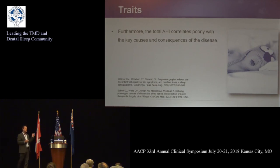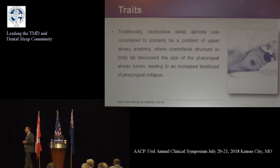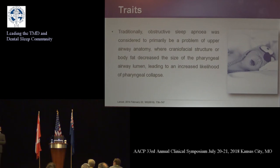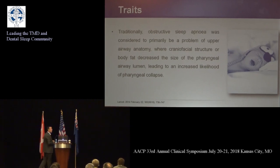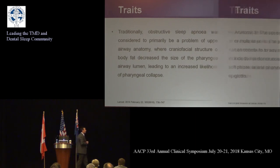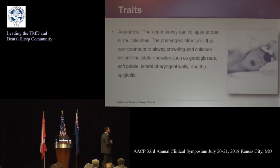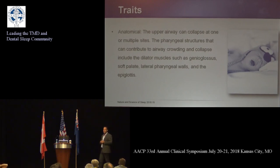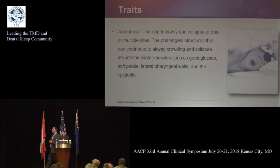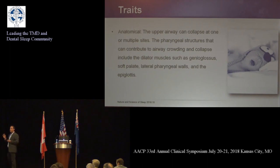There is a change happening in the last two to three years in how we look at obstructive sleep apnea. Traditionally, it was thought to be an anatomical model - simply open up the airway. But as Dr. Han showed this morning, there are enough people with good airways who still have sleep problems. Anatomically, the upper airway can collapse at one or multiple sites - the pharyngeal structures: the genioglossus, or tongue, the soft palate, the pharyngeal walls, or the epiglottis. So you have four sites that are potentially due to collapse of the upper airways.